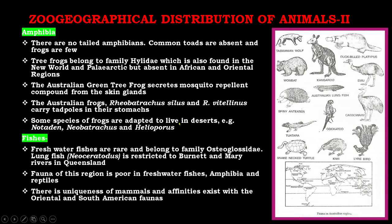Some species of frogs are adapted to live in desert, for example Notaden and Neobatrachus and Heleioporus. Freshwater fishes are rare and belong to family Osteoglossidae. Lungfish Neoceratodus is restricted to the Burnett and Mary rivers in Queensland. The fauna of the Australian region is poor in freshwater fishes, amphibia, and reptiles, but there is uniqueness of mammals and affinities with the Oriental and South American fauna.